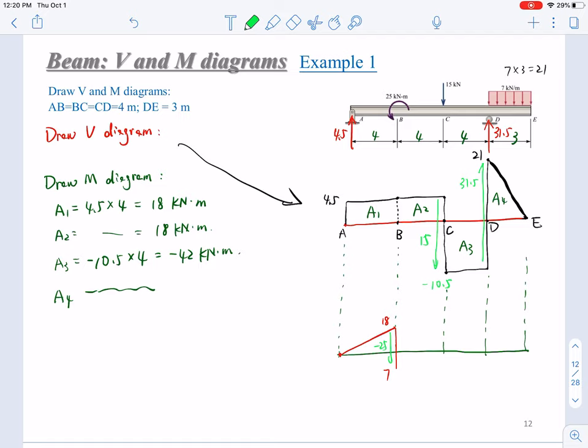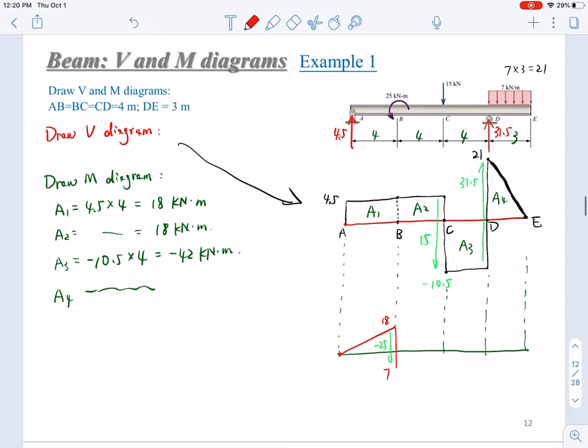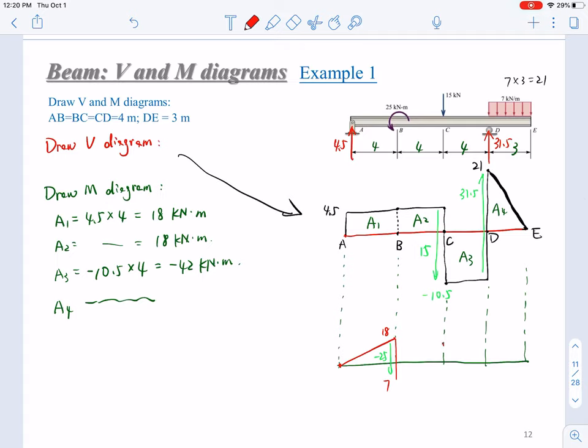Then from B to C, you will add another 18, it's A2. Here we get 11.